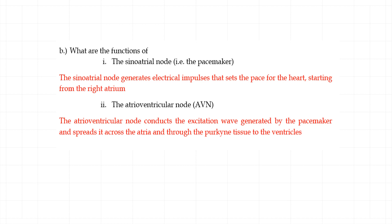The atrioventricular node takes that excitation wave — the electrical impulse generated by the SAN — and spreads it across the atria. The SAN starts in the right atrium, and the AVN will take that impulse, spread it across the atria, and then pass it through what we call the Purkinje tissues through the ventricles. Those are the functions of those two nodes, and they are very, very important.